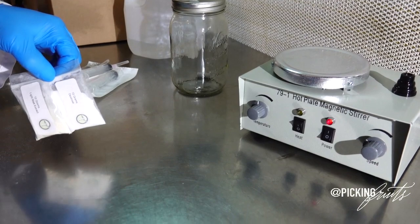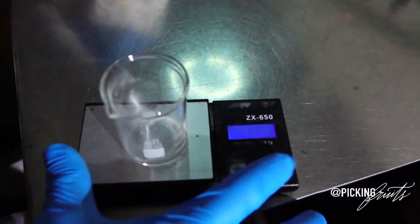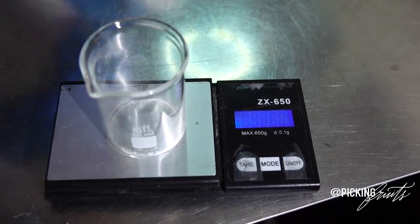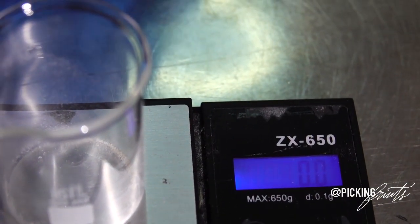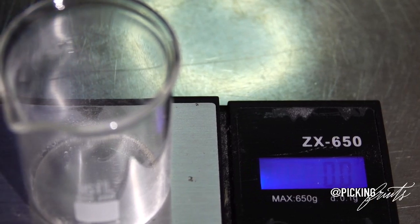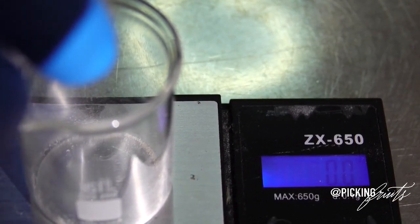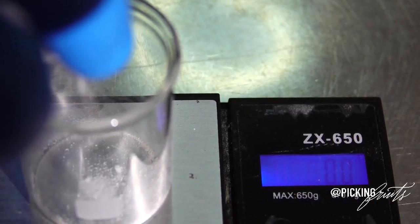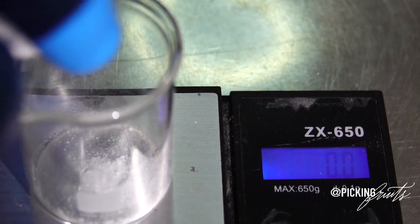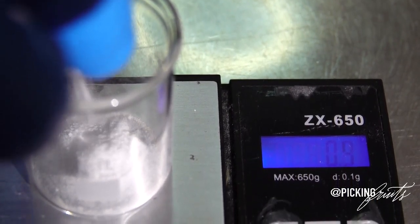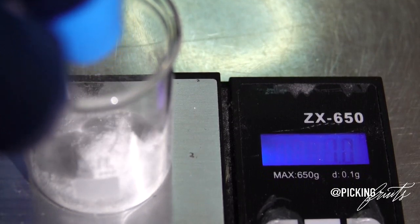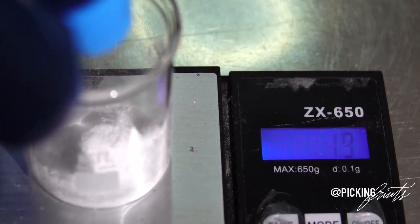So using our scale, we will make sure that our vessel is tared out. And we're going to be measuring 2.5 grams of each of our nutrients. So first I will add 2.5 grams of our dextrose. And if you don't know, dextrose is pretty much corn sugar that is somewhat isolated.